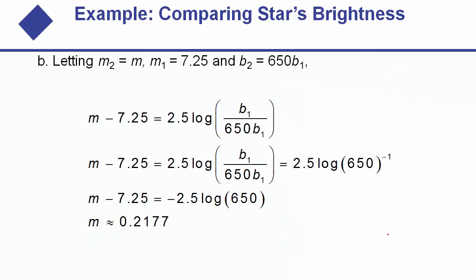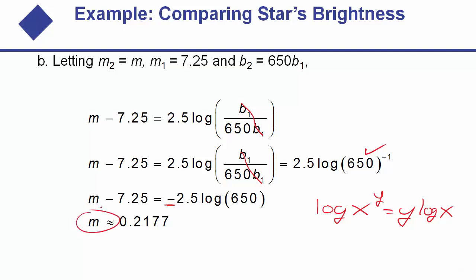Star magnitudes are just measurements of brightness on a logarithmic scale. For a second example, let m₂ = m (unknown), m₁ = 7.2, and b₂ = 650 b₁. Substituting into m₂ − m₁ = 2.5 log(b₁ / b₂): b₁ / b₂ = b₁ / (650 b₁) = 1/650 = 650 to the negative 1. Using the log power rule, log(650⁻¹) = −1 × log(650). Compute −2.5 × log(650) in your calculator, then add 7.2 to both sides to solve for the unknown magnitude m.